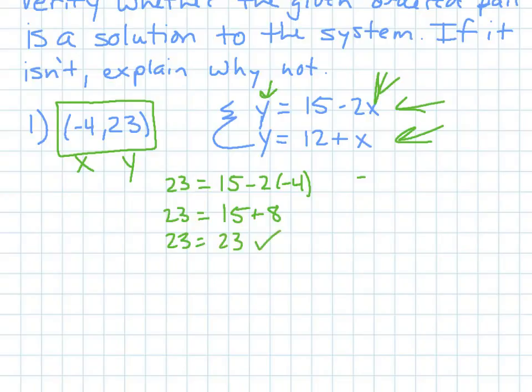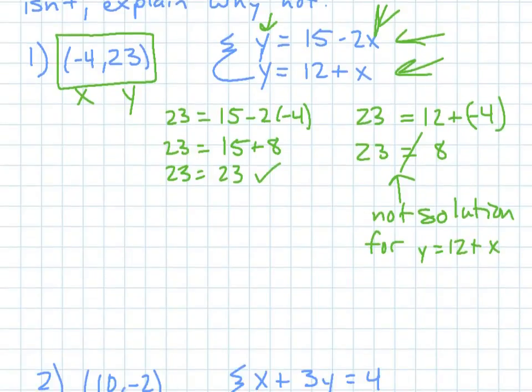Let's do it for the other one. 23 is still my y, equals 12 plus negative 4. Well, 12 plus negative 4 is 8. Nope, that doesn't work. So, because not a solution for the y equals 12 plus x line, therefore, it's not a solution for both equations at the same time. So, that would be my reason why. And that would be my answer, because it's not a solution.